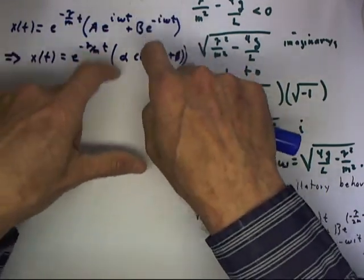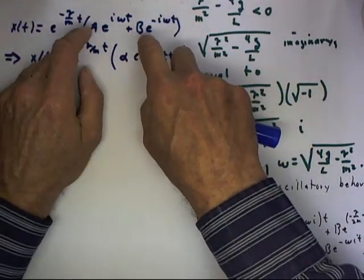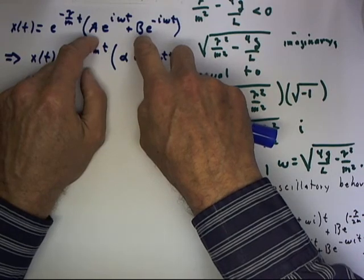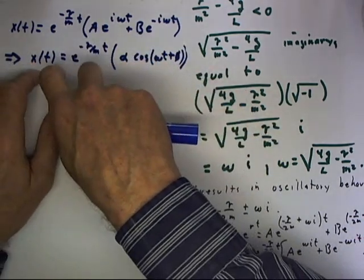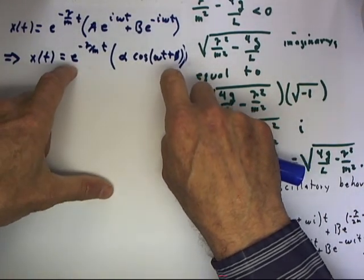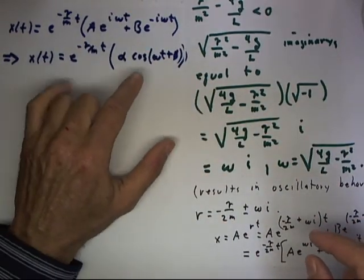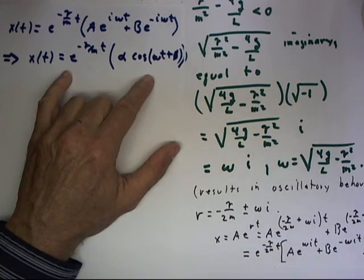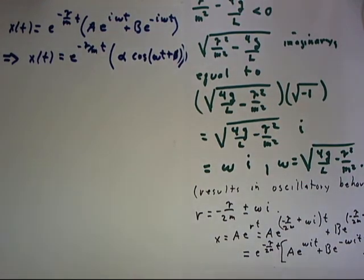Now, this isn't really equal to this, but if we choose our a and b properly, we can make it equal to this. So this is a valid solution to the equation, and it turns out to be a valid general solution to the real behavior of this system.